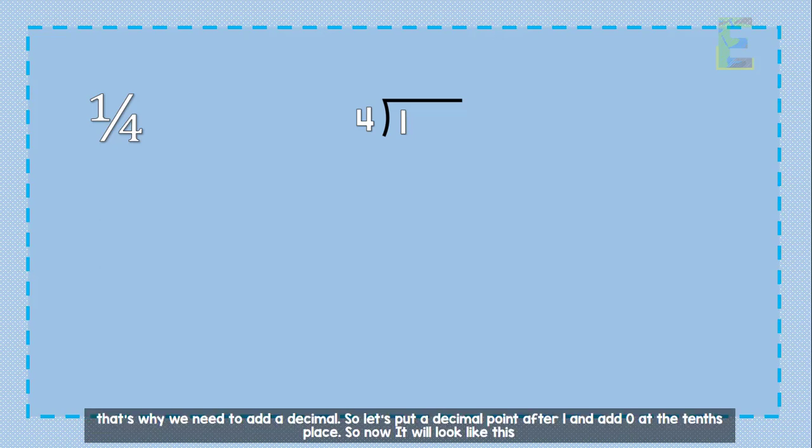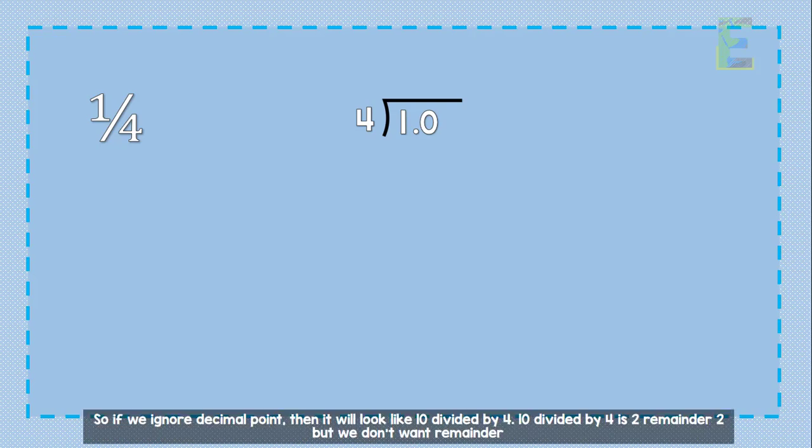So, let's put a decimal point after 1 and add 0 at the tenth place. So, now it will look like this. So, if we ignore the decimal point, then it will look like 10 divided by 4. 10 divided by 4 is 2 remainder 2.